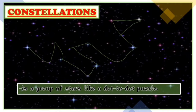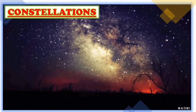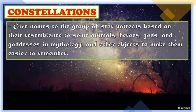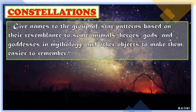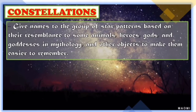During ancient times, people observed that different star patterns always appear in the night sky at different parts of the year. So the star patterns as viewed on Earth changed from month to month. They made use of these star patterns to keep track of the right time to plant and harvest their crops. With these constellations, they gave names to the group of star patterns based on their resemblance to some animals, heroes, gods, and goddesses in mythology and other objects to make them easier to remember.